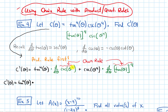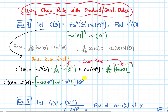For cosecant of theta to the fourth, the derivative of the cosecant part is negative cosecant cotangent. I can't just write theta in these spots, because chain rule says when you do the derivative of the outside, keep plugging in the same inside thing. In this case, the inside function is theta to the fourth, so I keep plugging in theta to the fourth. Then the chain rule step says multiply by the derivative of the inside, which is 4 theta to the third — that's power rule.